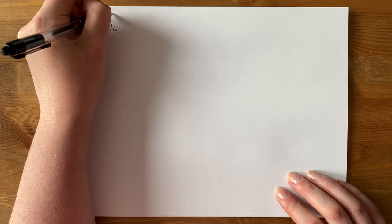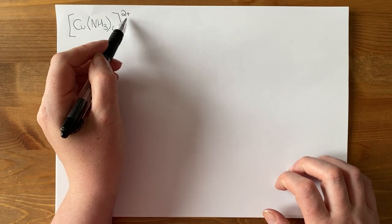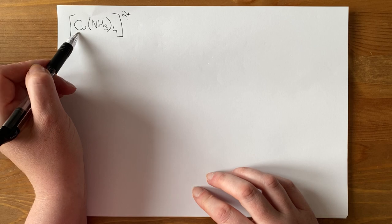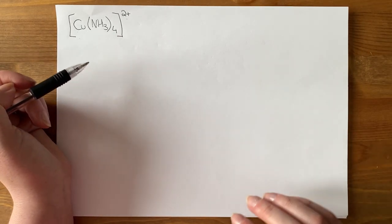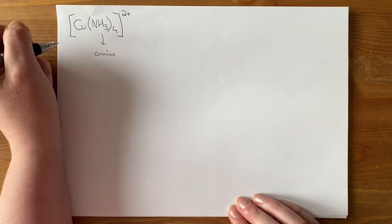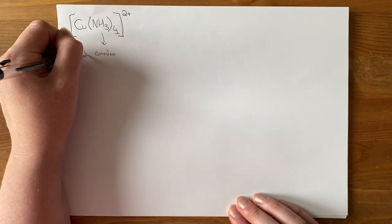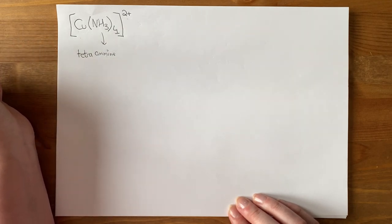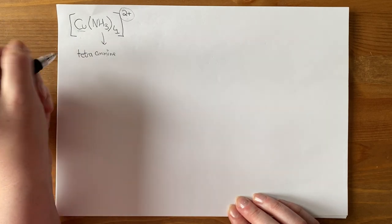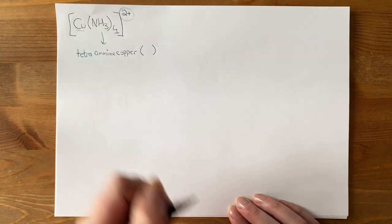Here we have a transition metal complex. A transition metal complex is always written in square brackets. This complex has an overall charge of 2+. And we've already spoken about everything inside now has to make that charge. So we're essentially wanting to work out the oxidation number of copper and try and work out what's going on here. So when we have a look at this, this is an ammine ligand. There are 4 of them. So NH3 is my ligand. There are 4 of them. So I have tetraammine. Yes, I have 2 As followed by 2 Ms.